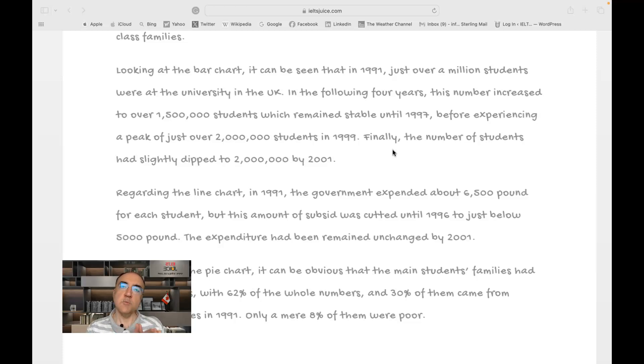So we call them discourse markers, words like finally, secondly, firstly. And these words whose responsibility is to help us transit from one sentence to another is very well used here. The number of students had slightly dipped. We don't need to use past perfect here. We're talking about a period in time in the past, so we know when it started and when it ended. So past perfect is really not necessary. A simple past tense would suffice. Dip to 2 million by 2001.